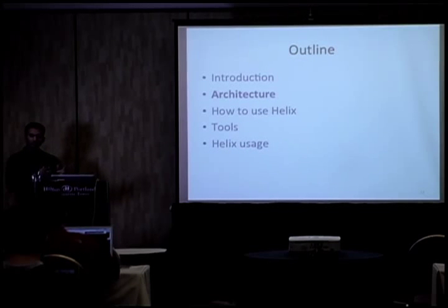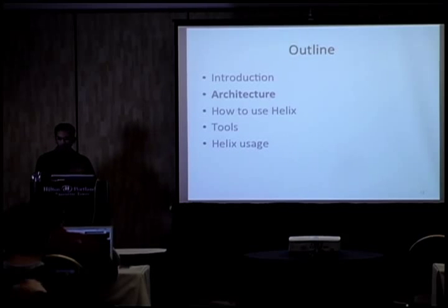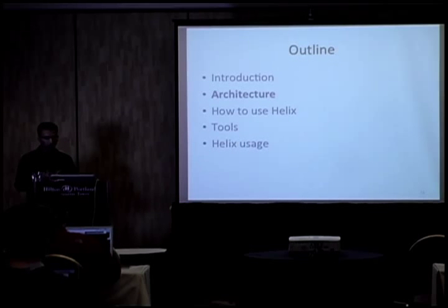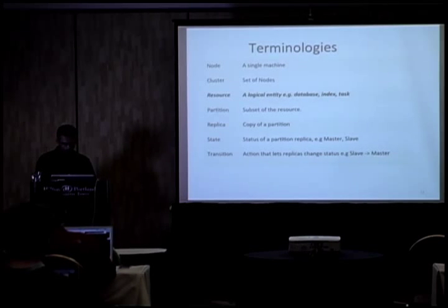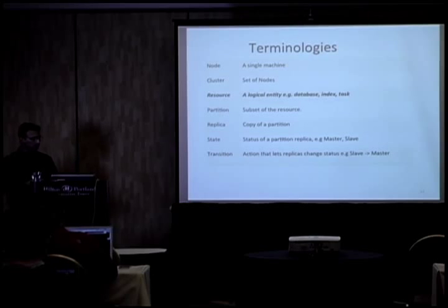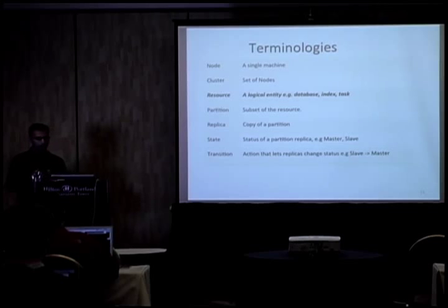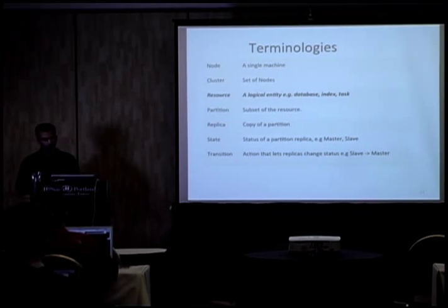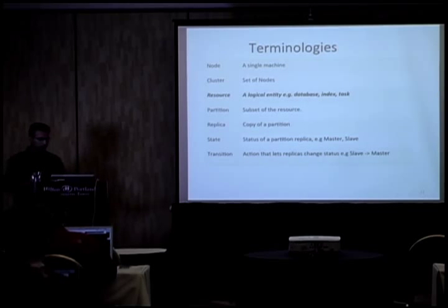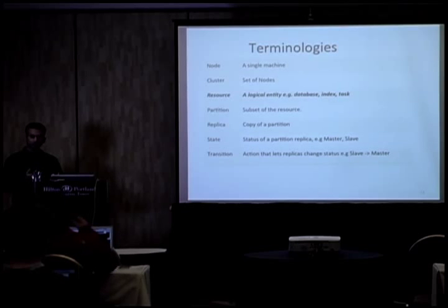This lays out the requirement for a generic system to help graduate from a single-node system to a distributed system quickly. Before getting into Helix's core concept, let me introduce some terminology. A node is a single machine or instance in the cluster. A resource is a logical entity that can span multiple nodes — a database sharded across nodes, a task with subgroups, or a sharded index. A partition is a sub-part of that resource. A replica is a copy. And state is used to model the behavior of that replica.